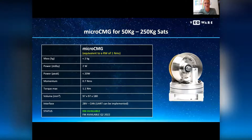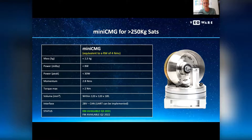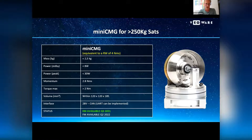This is our micro-CMG, which we like to compare with a one Newton-meter-second reaction wheel. For those of you familiar with reaction wheels, you can see that for the mass, peak power, and the momentum the wheel is holding, we can create a lot of torque. The same can be said for its bigger brother, which we call the mini-CMG — we compare it to a four Newton-meter-second reaction wheel — where for the same mass, peak power, and momentum it holds, we can create a lot of torque.